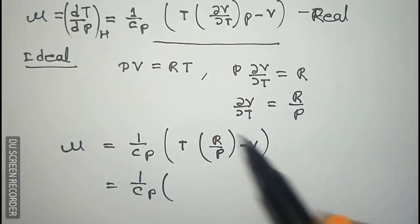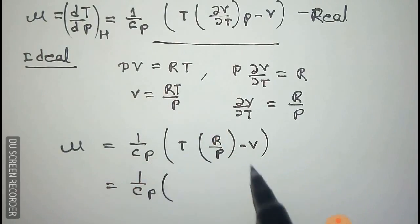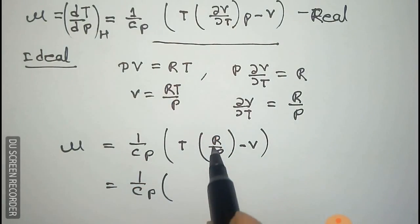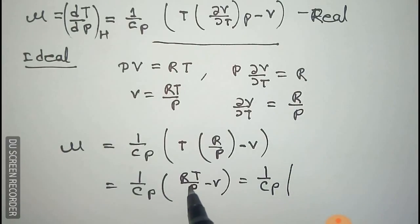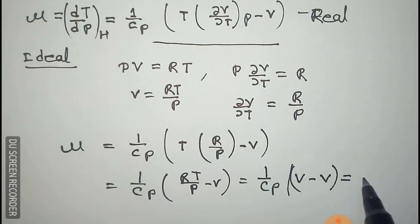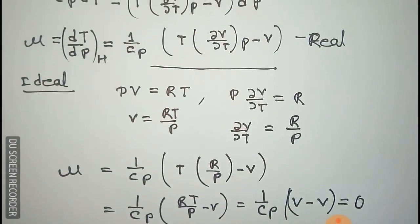From the ideal gas equation V equals RT by P, we can rearrange to get RT by P minus V, which equals zero. Therefore, for ideal gas mu is zero, while for real gas the coefficient is as derived earlier.